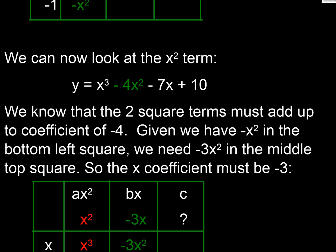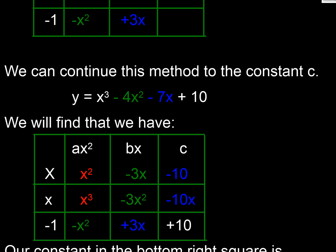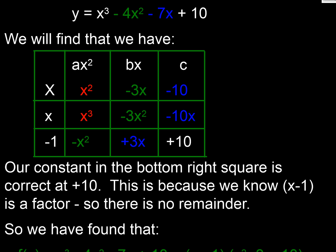Here's another version of that. Looks a bit neater and tidier. There it is. It's nice and neat and tidy. So what have we proved here? We've proved that this expression up here, x cubed minus 4x squared minus 7x plus 10 is equal to x minus 1 times this lot here. There it is, x squared minus 3x minus 10.